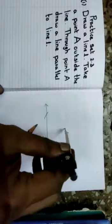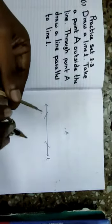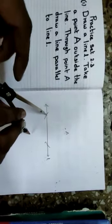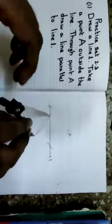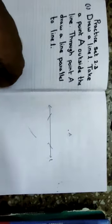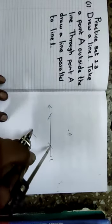Once again: put the pointer at A and the pencil. Mark at L1 here and here. Now keep the same distance — don't change the distance. Keep the pointer where you have drawn the arcs. Draw one arc here. After drawing the arc, keep the pointer at the other arc and draw the intersection.